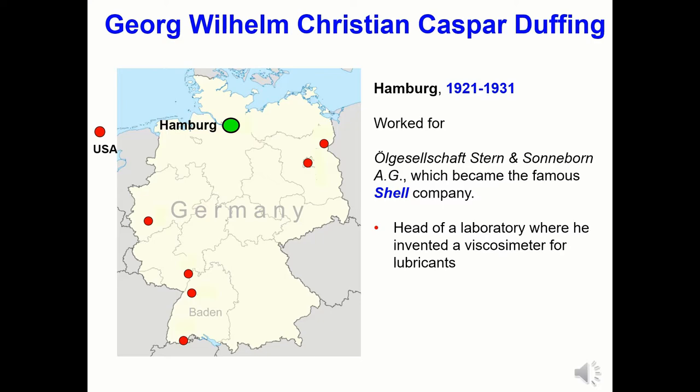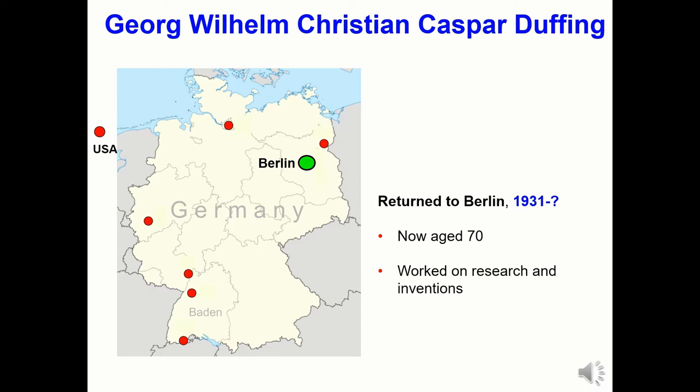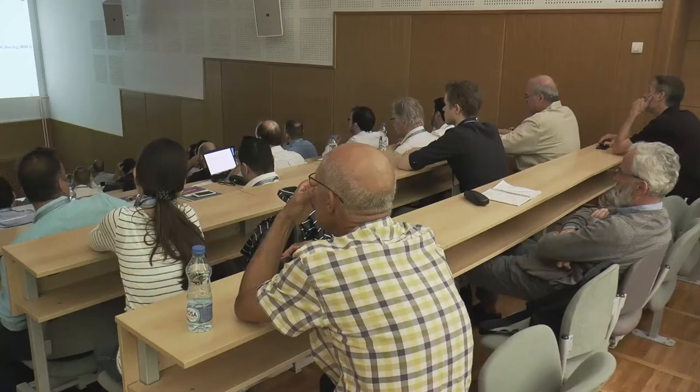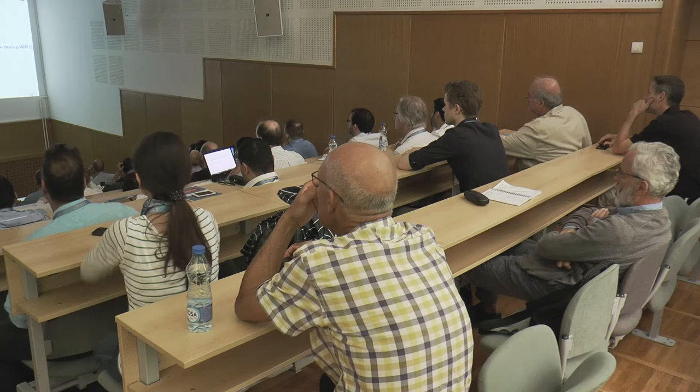The Duffing family moved back to Berlin in 1931. Now aged 70, Duffing carried on with his research and inventing activities. At the time of the Second World War, he had particular difficulties during the bombing raids, as he could not easily take shelter because of problems with his leg due to a thrombosis he had suffered earlier in his life. The family subsequently moved to Schwitt, a small peaceful town on the river Oder, where they stayed until he died in 1944.